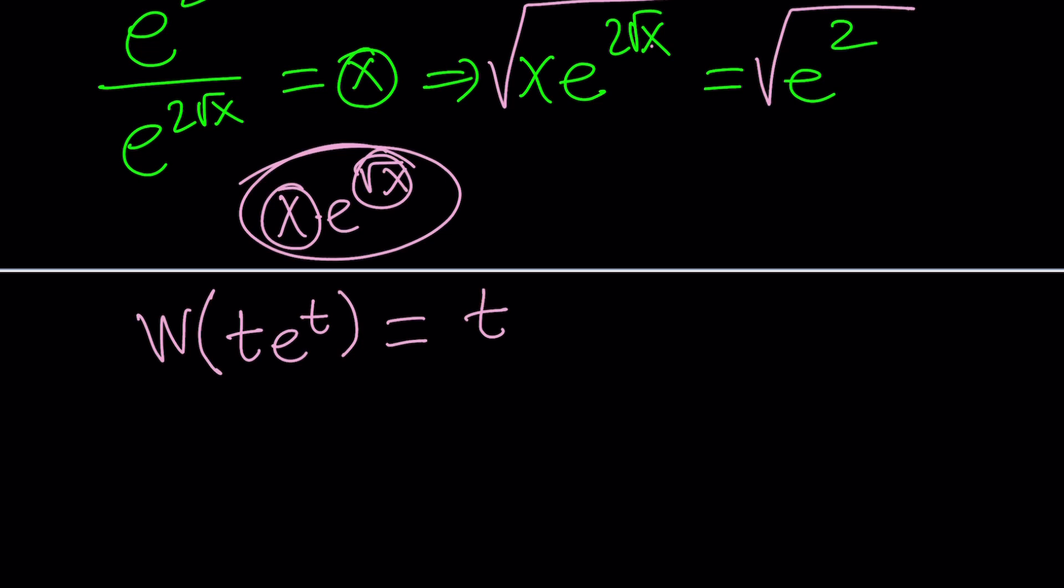So we're going to go ahead and simplify this first and then apply the super power or the special function. Now when you square root x it's just going to be the square root of x and when you square root something like this it's basically raising it to the power one half which means you're going to get rid of the two in the exponent. In other words this is going to be e to the power square root of x. You see why it's helpful?